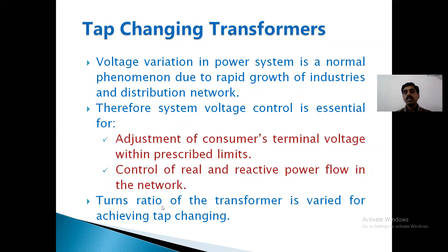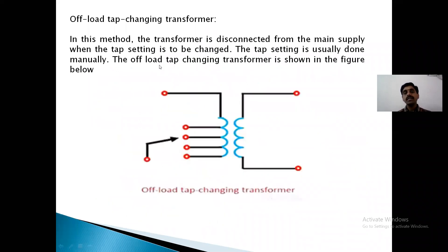The turns ratio of the transformer is varied for achieving tap change. To get the tap changing, the turns ratio N2/N1 must be changed. Let us see the offload tap changing transformer.